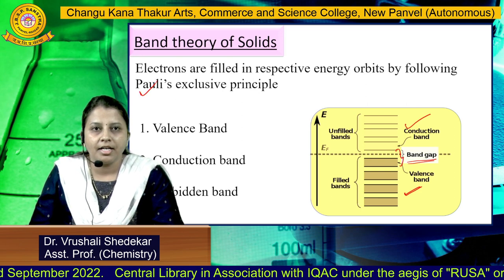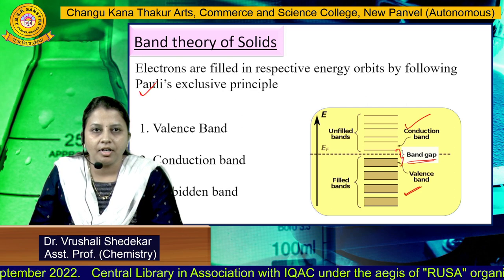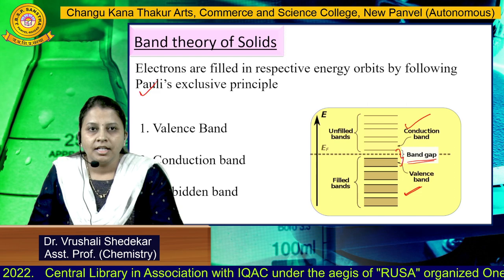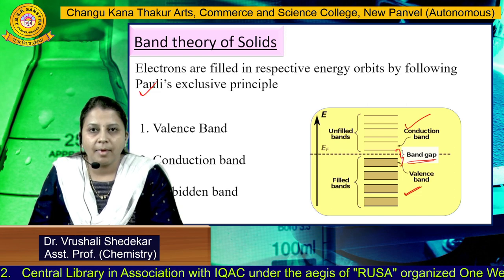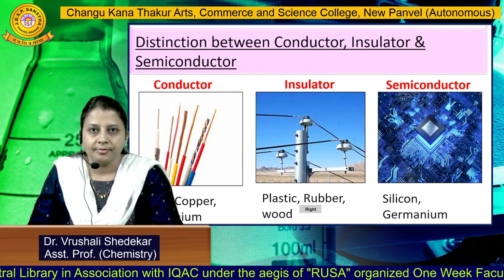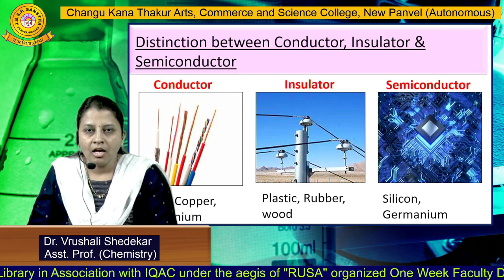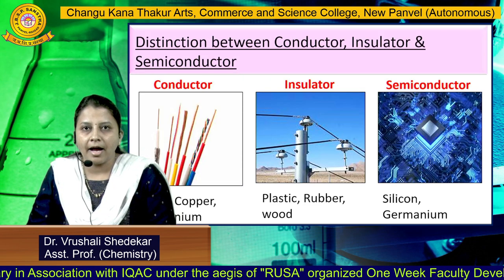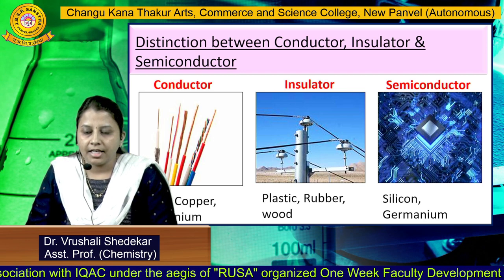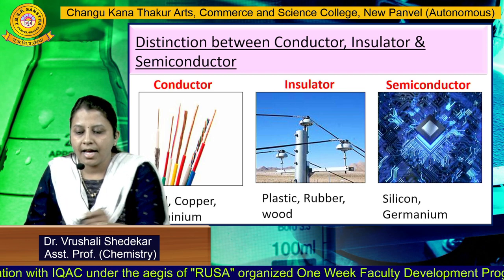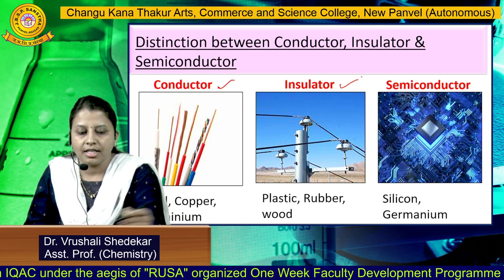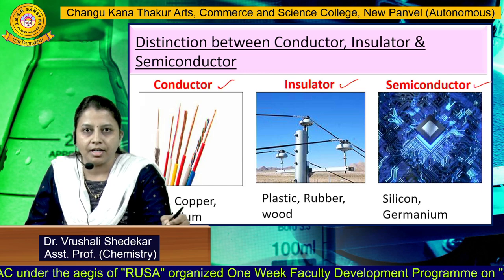The band gap of a material is very important for material analysis and is analyzed using the DRS technique. On the basis of band theory, materials are classified as conducting materials, insulators, and semiconductors.